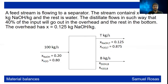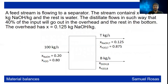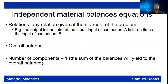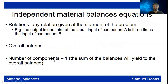Once your diagram is complete, perform the independent material balance equations. There are three types: relations (any relationship given in the problem statement, e.g., the output is one-third of the input), the overall balance (whatever enters must go out), and per-component balances — minus one, because the sum of all component balances yields the overall balance, so that one is not independent.